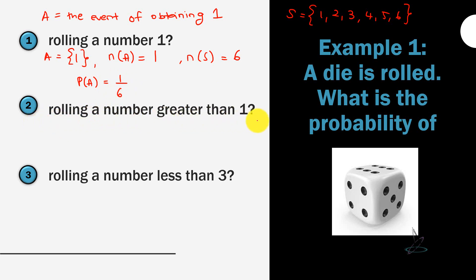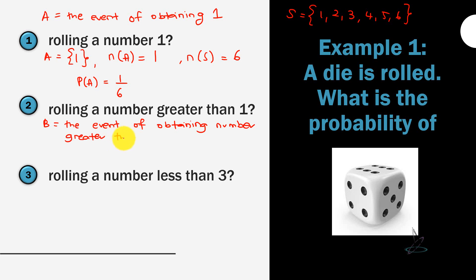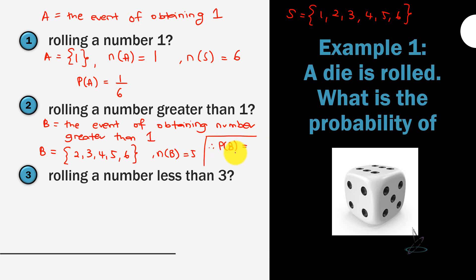For question 2, rolling a number greater than 1: let B be the event of obtaining a number greater than 1. Listing all possible outcomes for B gives {2, 3, 4, 5, 6}, so n(B) = 5. Therefore, P(B) = 5/6.